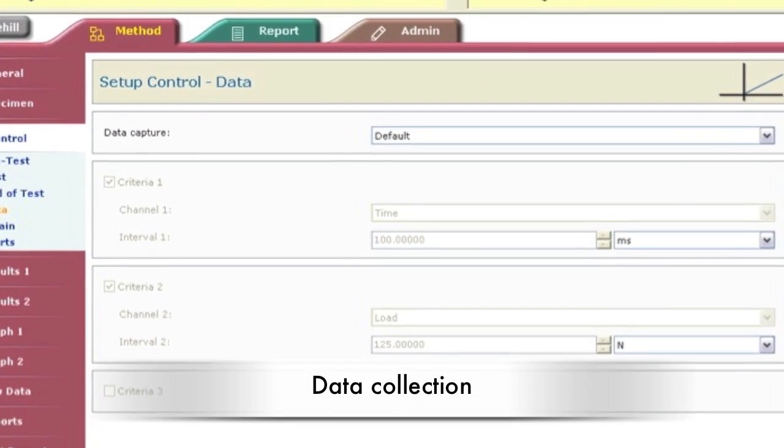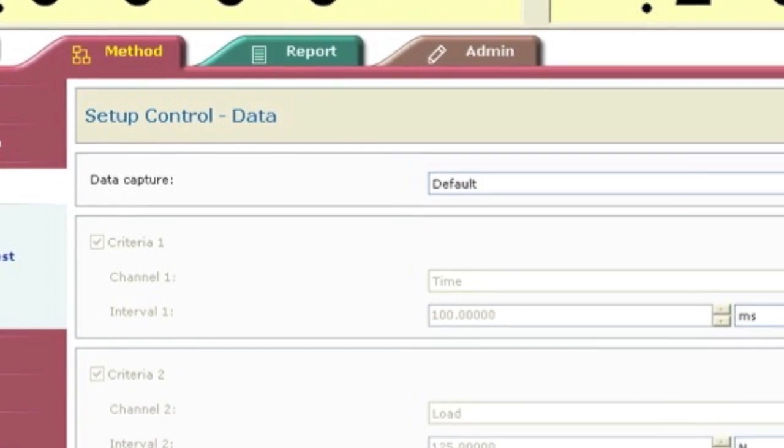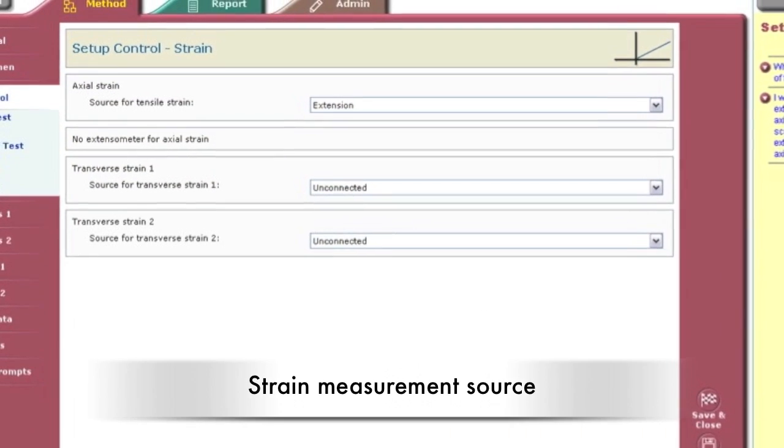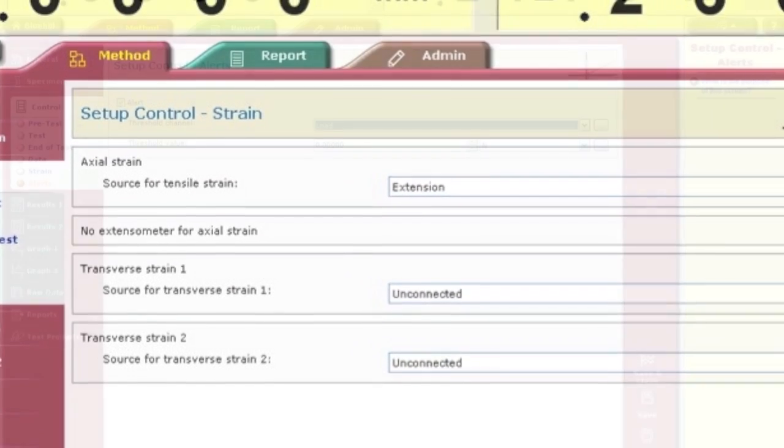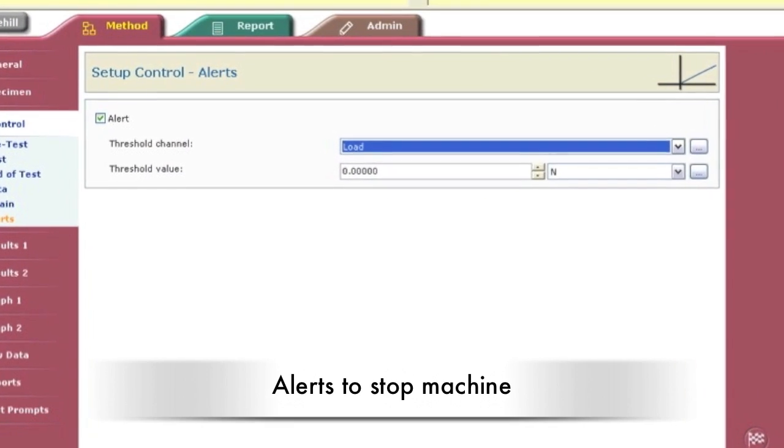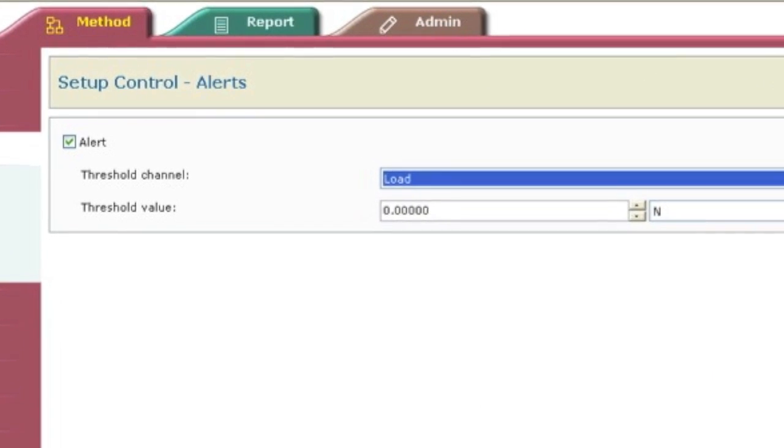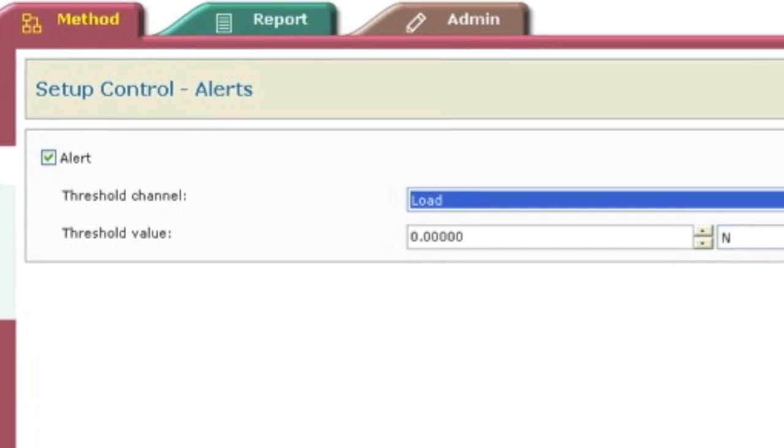The data tab specifies if the data is acquired manually or automatically, while the strain tab recognizes whether the strain is measured from the video extensometer or the extension. Alerts can be set up to stop the machine if certain criteria are reached, such as the maximum load that the load cell can withstand.